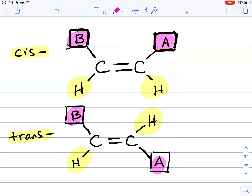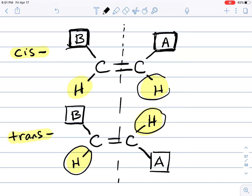You can use either the alkyl groups or the hydrogens as your focal point to define cis and trans — just choose one. Personally, I use hydrogen as my focal point. Note that if you cut a plane vertically, both hydrogens appear on opposite sides of each other. The horizontal cut is what we use to determine cis versus trans.